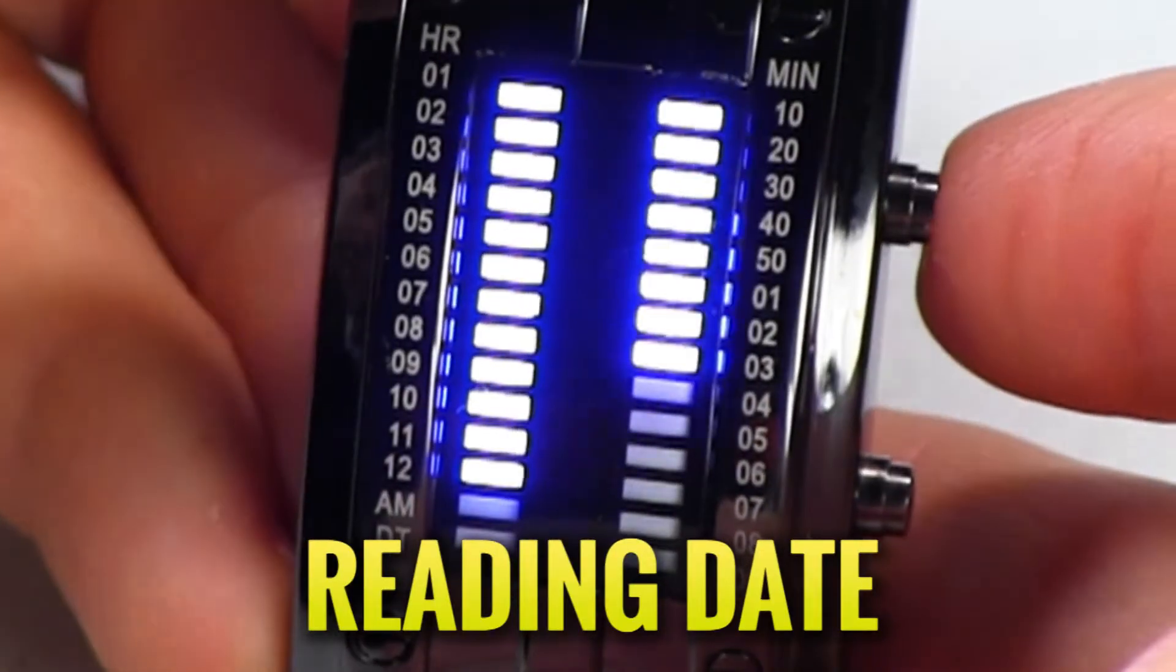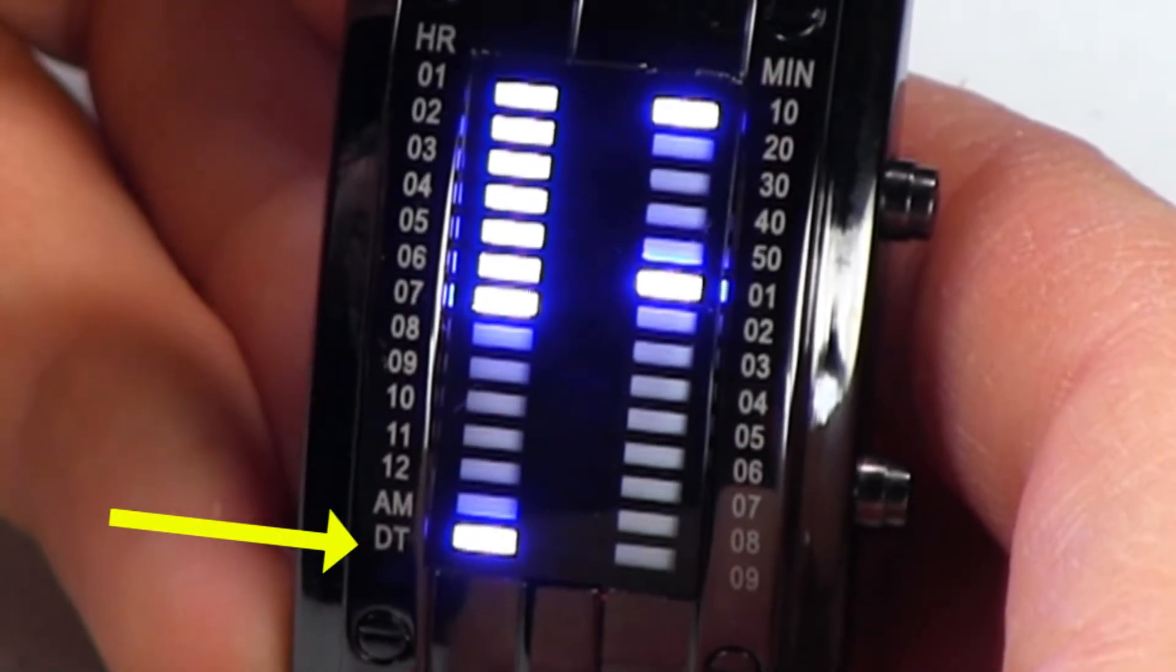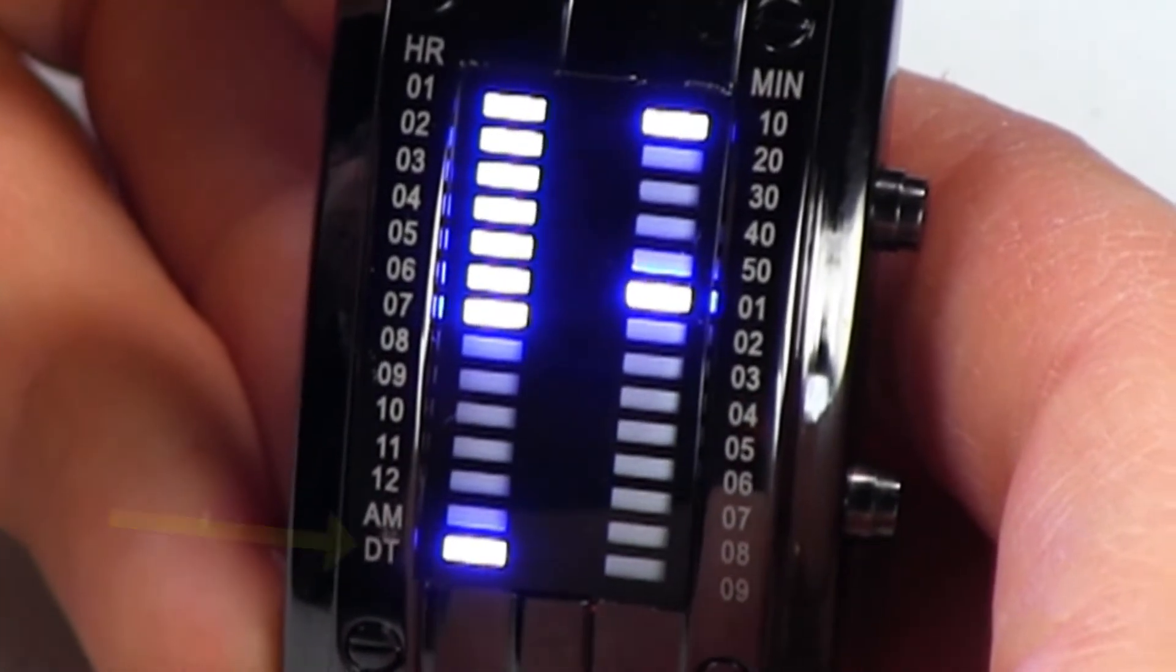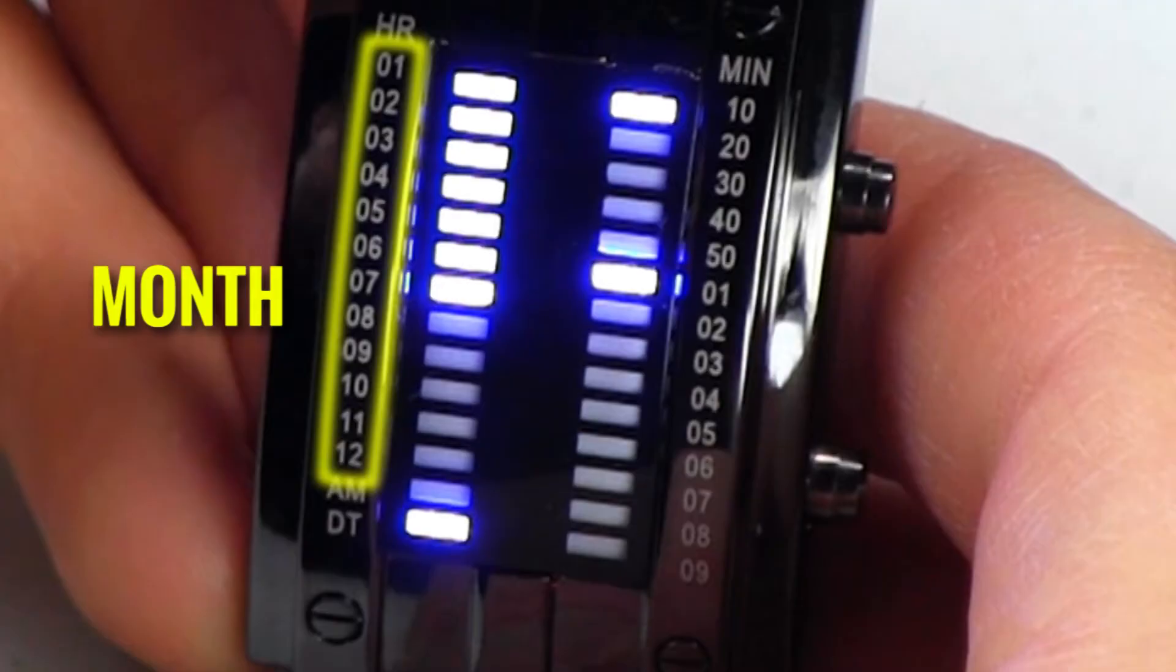And to read the date, I'm going to hit the button twice and you'll see that it's the date by the DT indicator on the lower left. When that's lit, you're seeing the date and not the time. The date is read like this. The numbers on the left that go through one to 12 indicate the month.